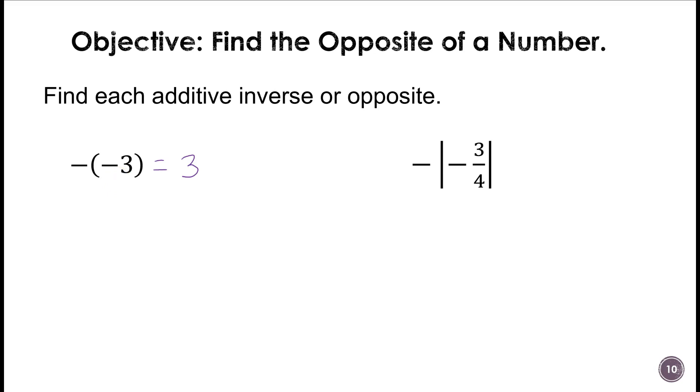So anytime you have a double negative on one number, that number is positive, and the opposite of that would be negative 3. I know these are confusing, so you'll have to be careful on how you work with these.